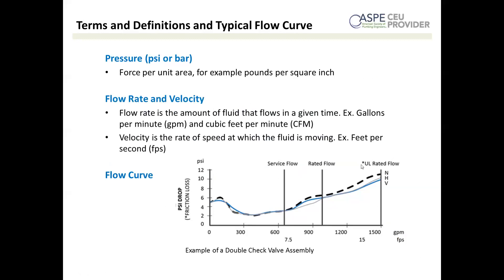UL rated flow is 150% of rated flow and is not recommended for continuous duty. This is typically only used for fire systems where you should either have no flow or, in case of a fire, extremely high flow — now you're drag racing. Also notice on the right-hand side the N, H, and V designations, which correspond to three different orientations for a backflow preventer: an N pattern (flow up, across, and down), a horizontal installation (flow left to right), or a vertical installation (flow bottom to top). These all have slightly different performance characteristics.